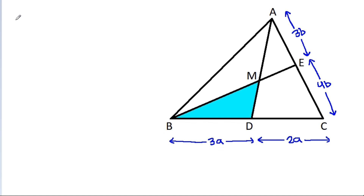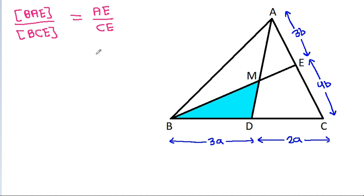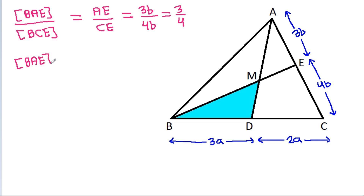Here, area of BAE by area of BCE it will be equal to AE by CE. And AE is 3b, CE is 4b. That will be equal to 3 by 4. That means, if area of BAE is 3a, then area of BCE it will be equal to 4a.